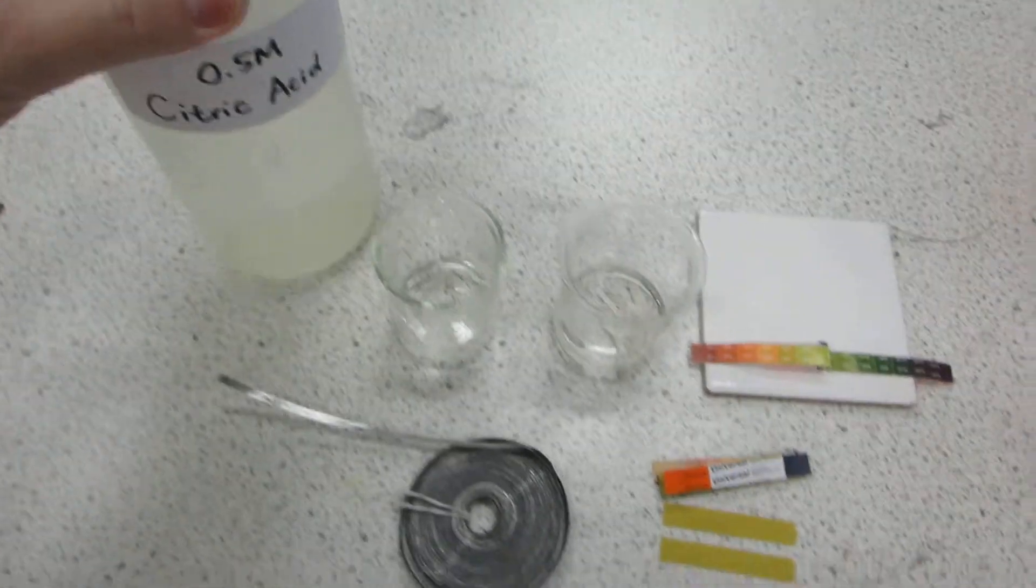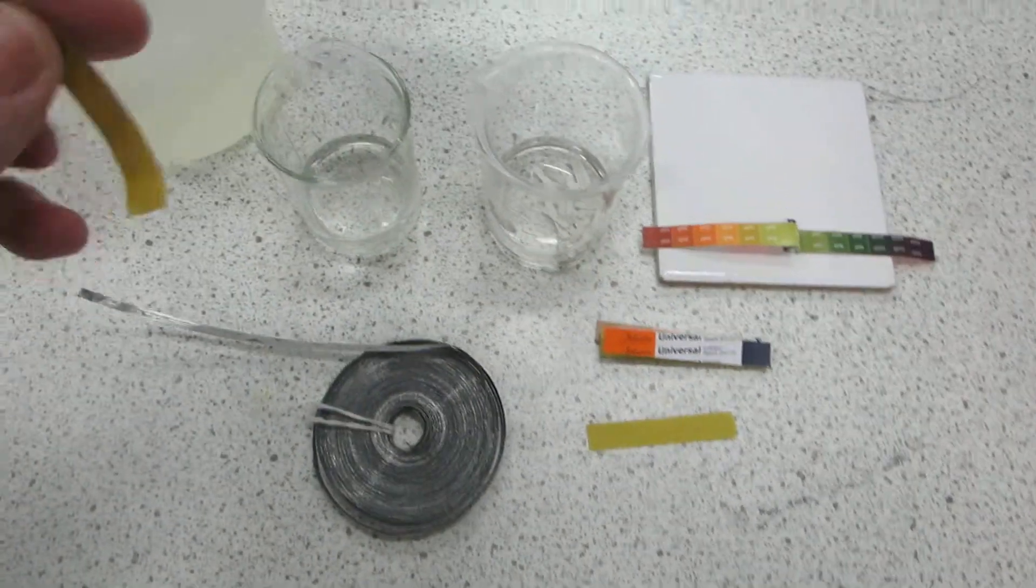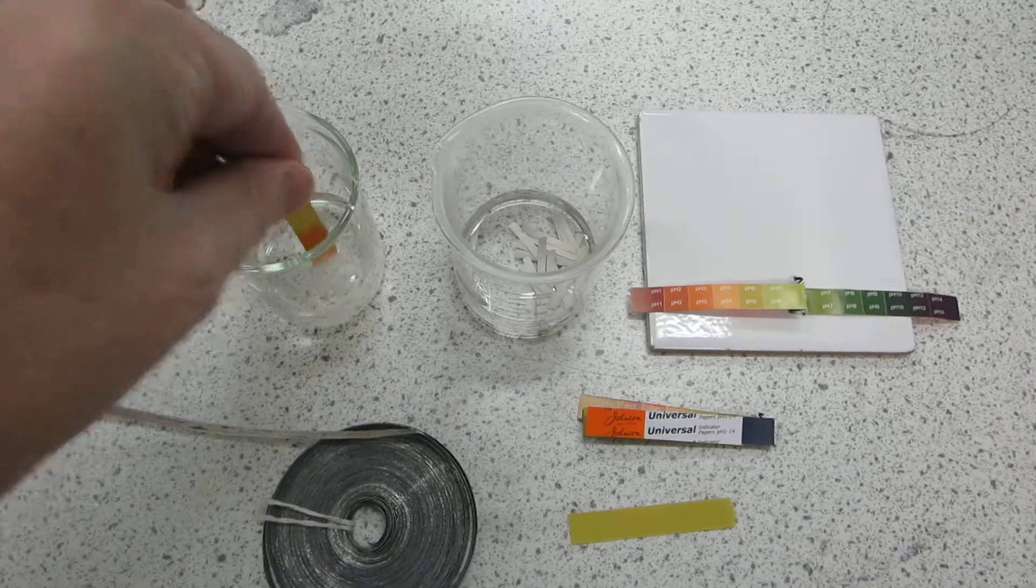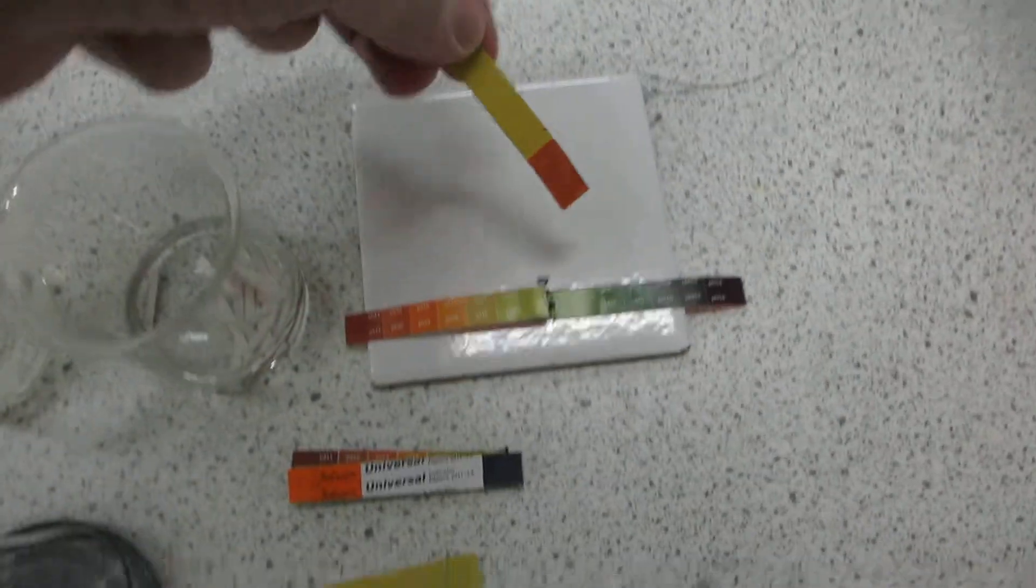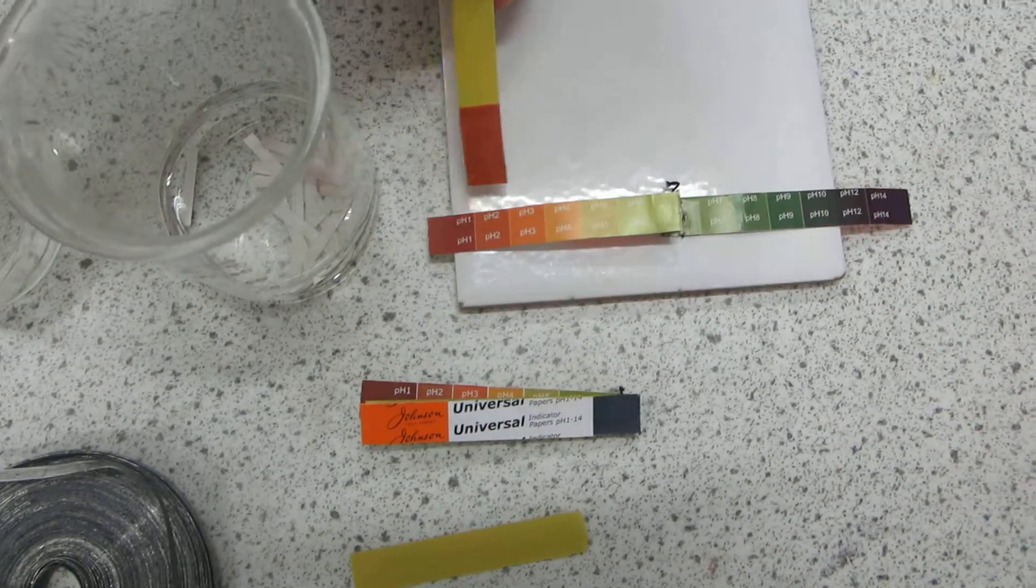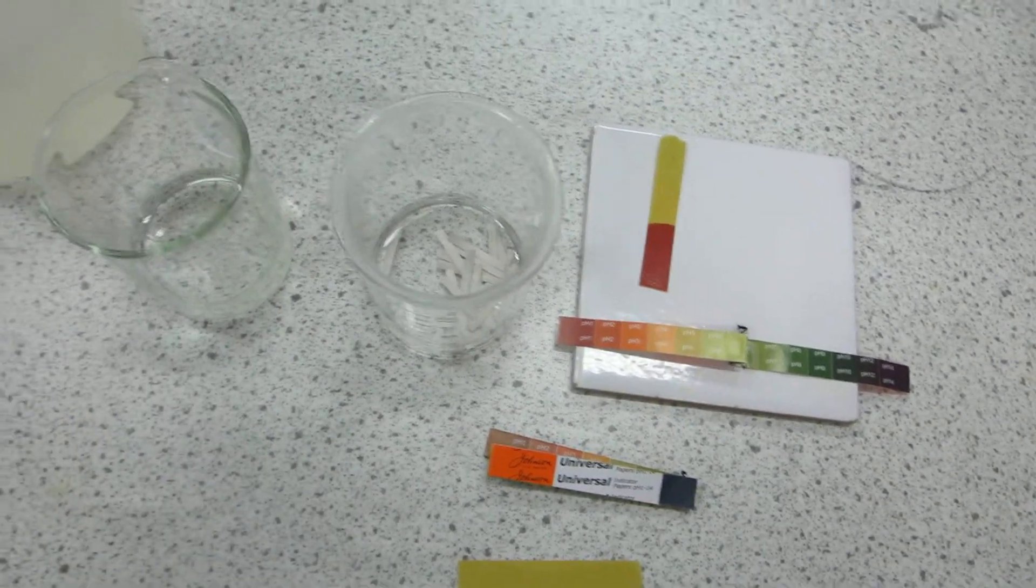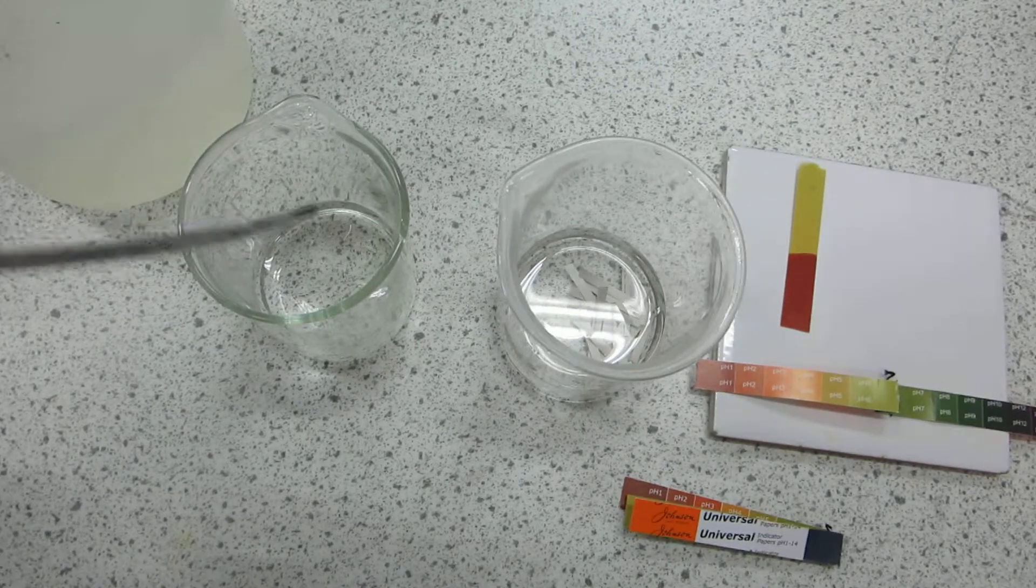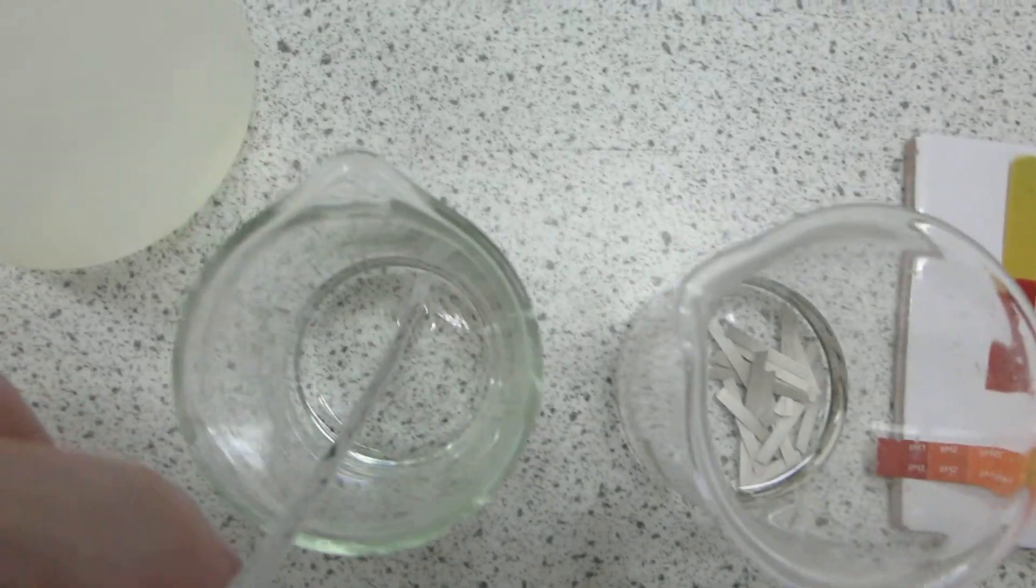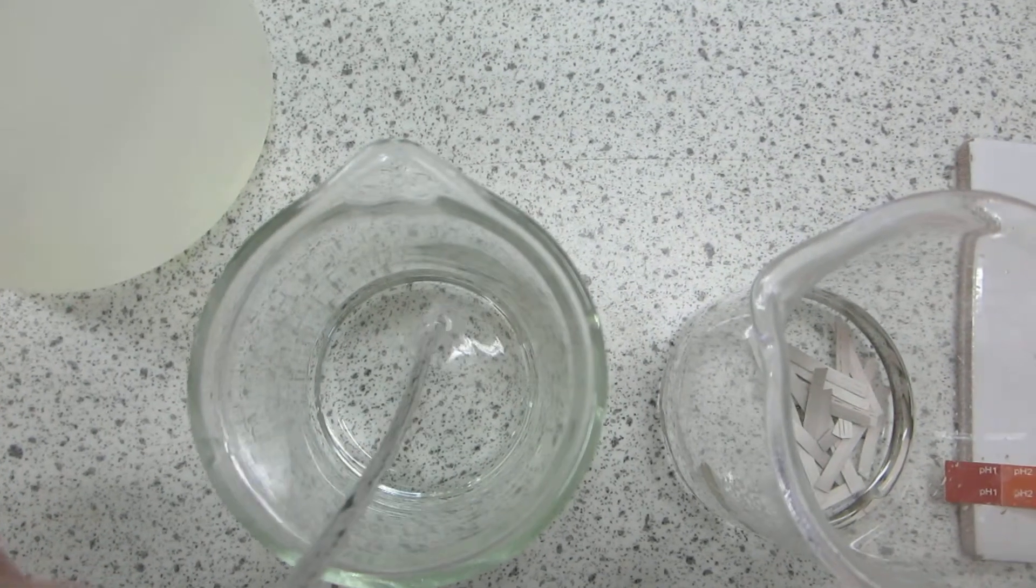Citric acid, 0.5 molar. If we measure the pH with this universal indicator, we see we get a pH of one to two. If we add magnesium to the citric acid, we can see a rapid, vigorous reaction.